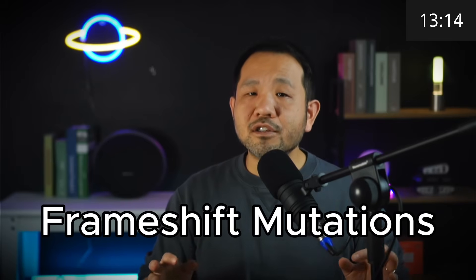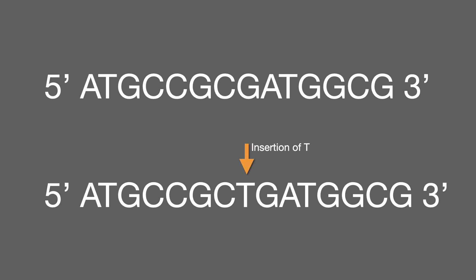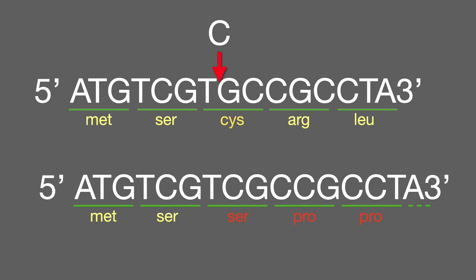Frameshift mutations are pretty crazy. As the name suggests, the mutation shifts the reading frame of the triplet codons, potentially creating a huge problem for the polypeptide. They occur due to either an insertion or a deletion of a nucleotide somewhere along the gene. The addition of that one nucleotide shifts the entirety of the reading frame that follows, potentially leading to what we call an extensive missense, or even an early termination due to a nonsense mutation.